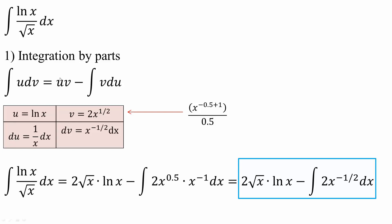Next, I will apply integration by parts. So it's going to be uv, so u times v. So 2 times the square root of x times ln x minus the integral of v du.